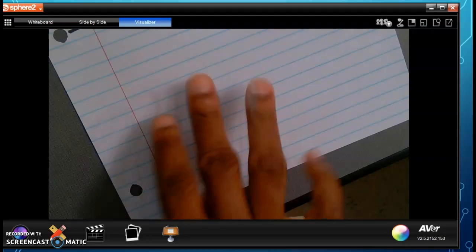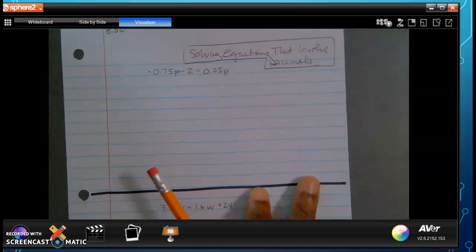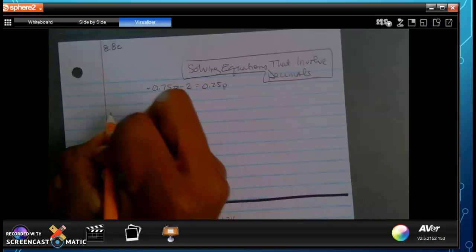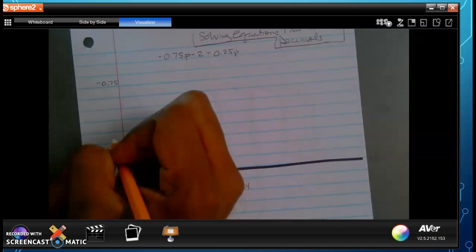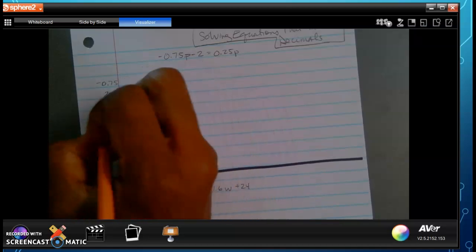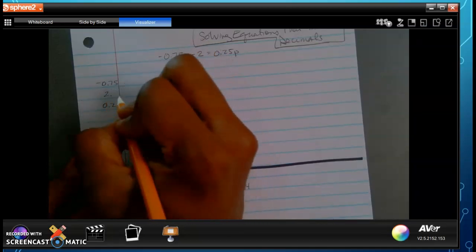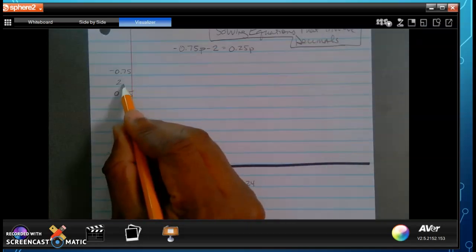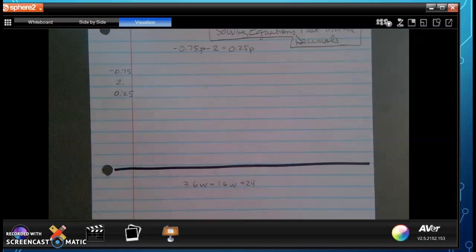So let's go ahead and go over to our work. If we take a look at this first equation, this is negative 0.75p minus 2 is going to be equal to 0.25p. The first thing that I want to do is I want to go ahead and list all of the decimals that I have here. I have negative 0.75, and this is going to be applied to all the terms. I have the number 2, there is an assumed decimal place there, then I have 0.25.